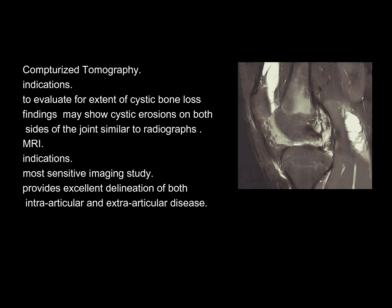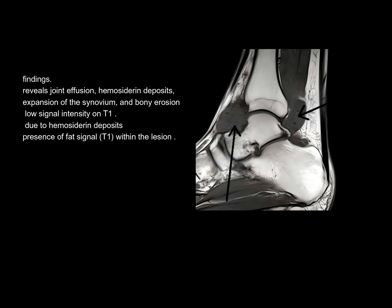MRI — Indications: the most sensitive imaging study, providing excellent delineation of both intra-articular and extra-articular disease. Findings include joint effusion, hemosiderin deposits, expansion of the synovium, and bony erosion. Low signal intensity on T1 is due to hemosiderin deposits and presence of fat signal within the lesion. The sagittal T1 sequence shows low signal lesions within the ankle joint, suggestive of PVNS.